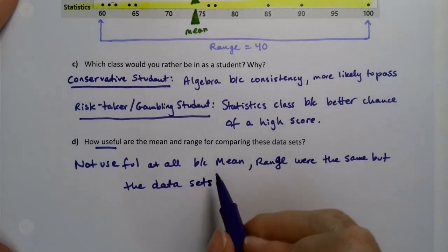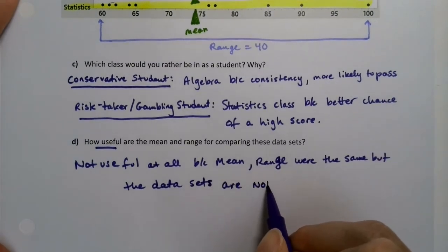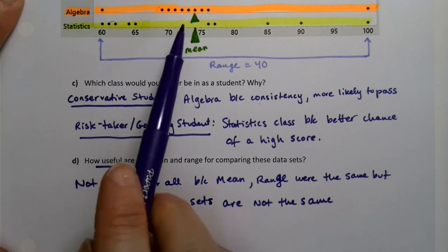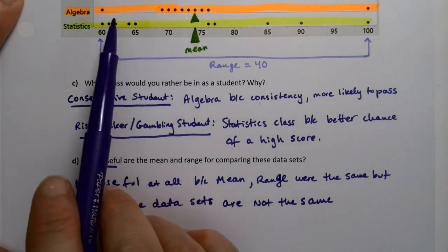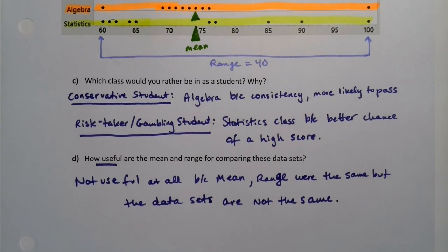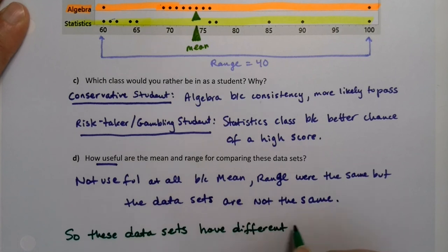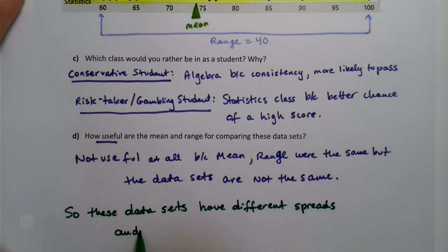They definitely have different spread. And you can see it when you're thinking about being a student in one class or the other. You can tell why I'd rather be in this class, or why I'd rather be in this class. There are reasons for that, that shows that they're not the same. So we need a better measure of spread. These two data sets have a different spread to them, and range was not cutting it. These data sets have different spreads and we need a number that will show that to us, a more refined measure of spread that will find that for us.